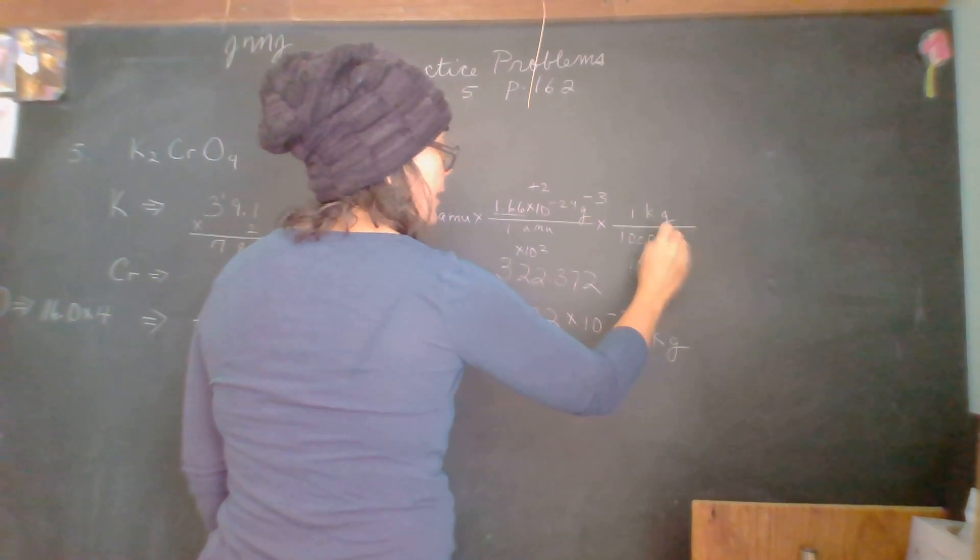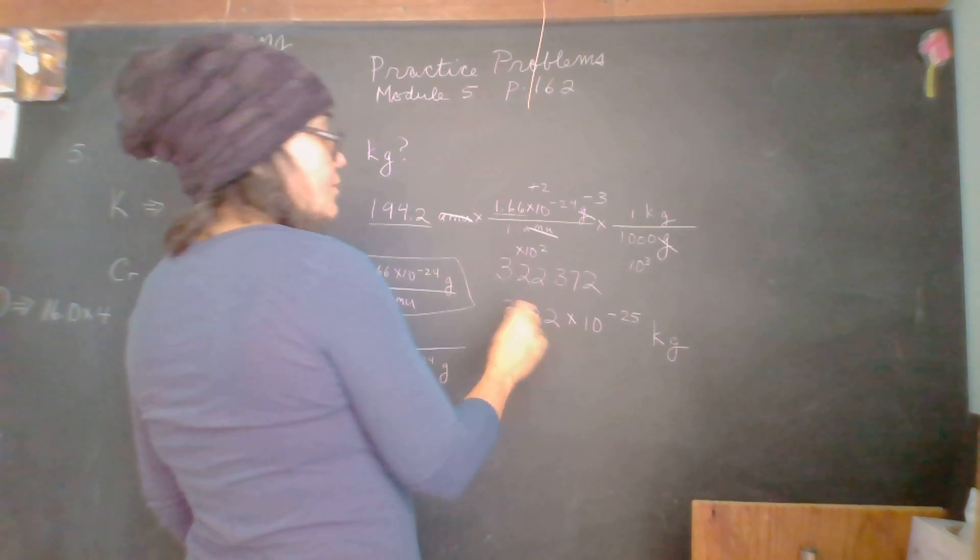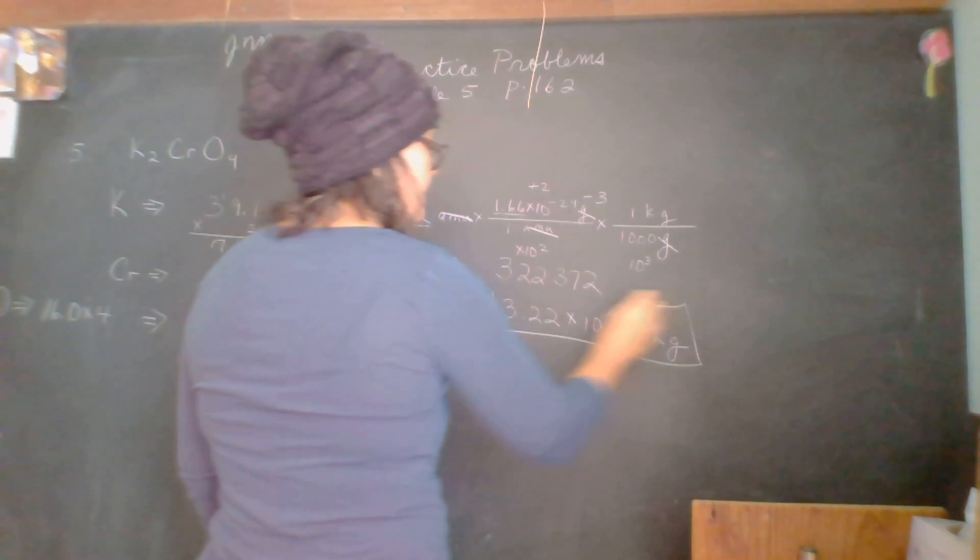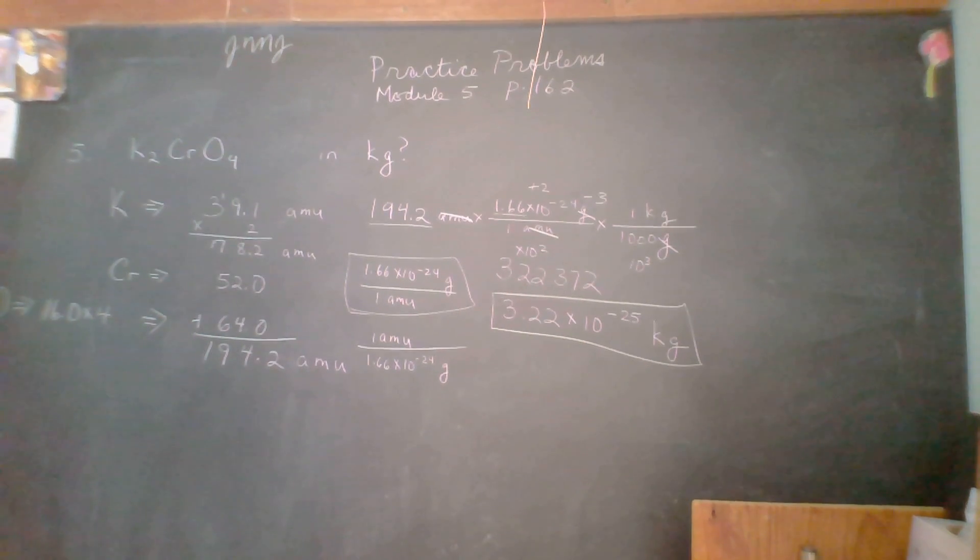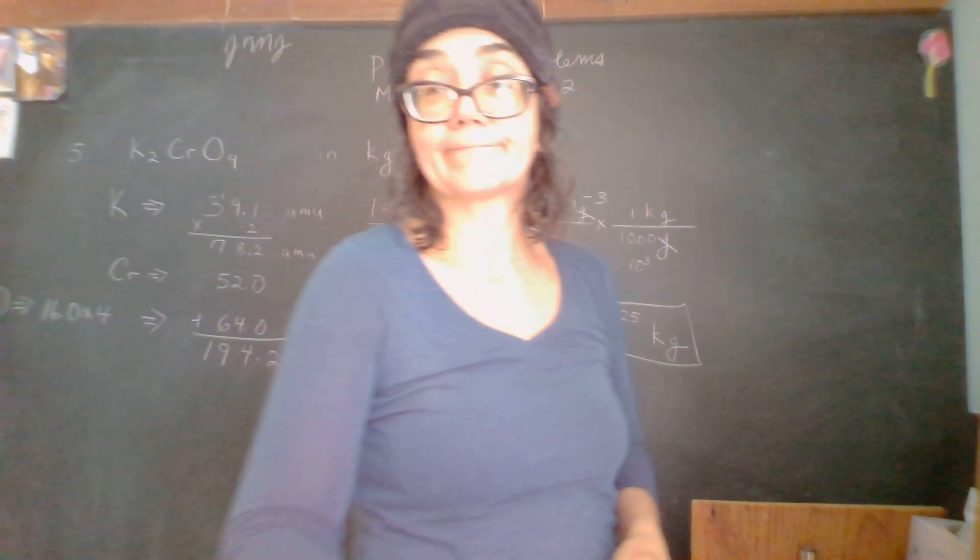Kilograms. Right? Grams cancel. And AMU cancel. And we end up with just kilograms. So a very, very small amount of kilograms. 3.22 times 10 to the negative 25th kilograms. Yeah. Thank you.